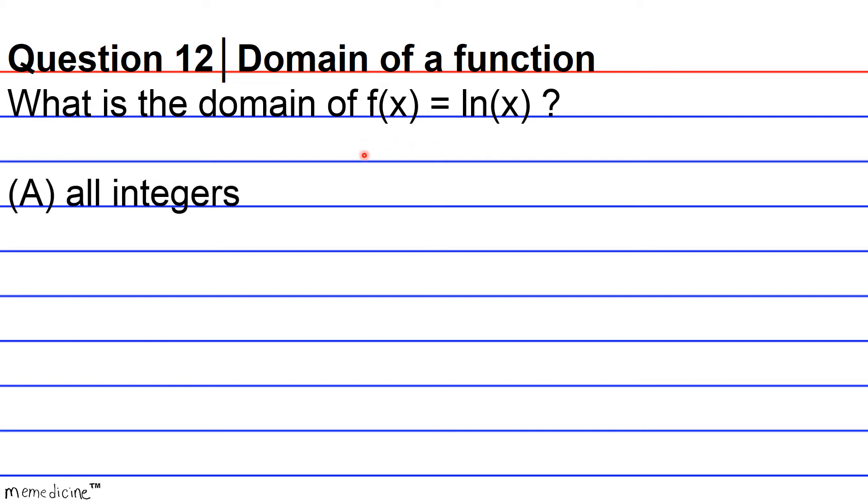Is it going to be A, all integers? And just in case you're wondering what an integer is, integers are counting numbers. These are the hash marks you see along a number line or an x-axis. So numbers like 1, 2, 0, negative 100, 10, anything that can be written along a number line.